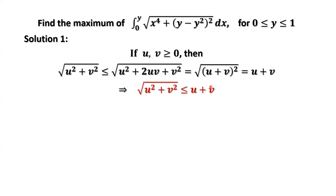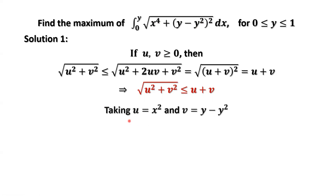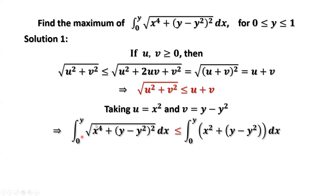How to apply this result to our question? Comparing this square root, we can easily see that in our situation, u equals x² and v equals y − y². Therefore, we let u = x² and v = y − y². The original integral is then less than or equal to the integral from 0 to y of (x² + y − y²) with respect to x.